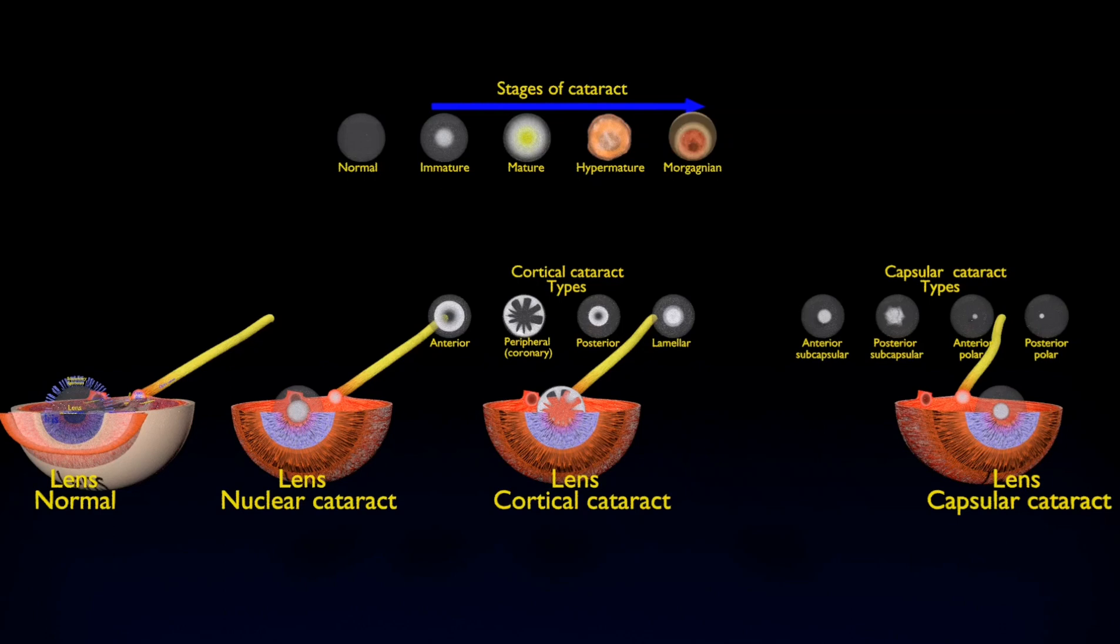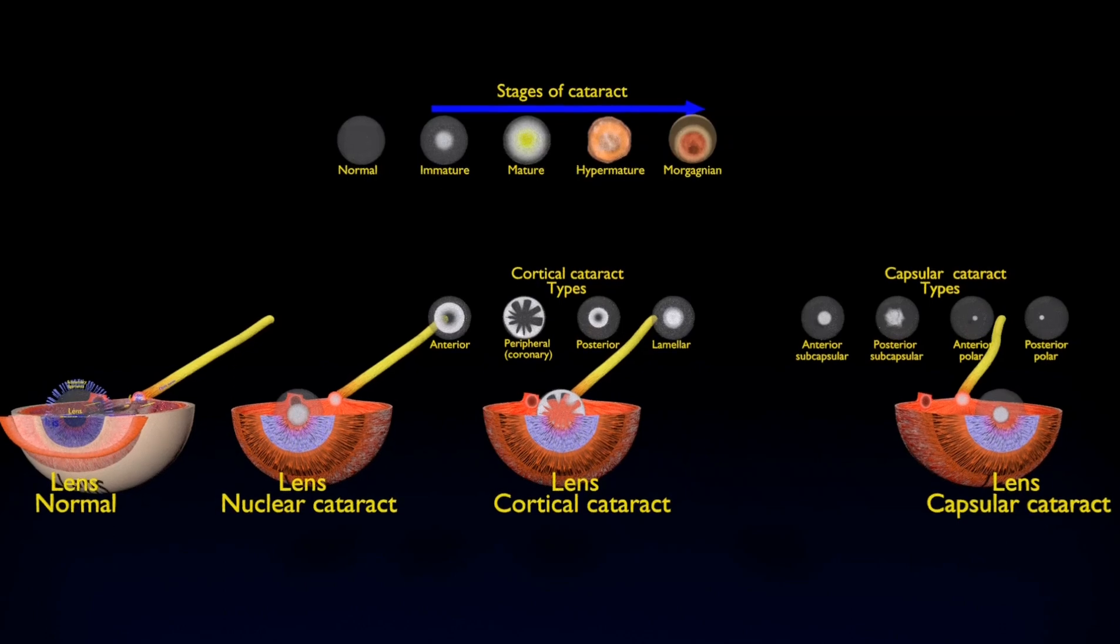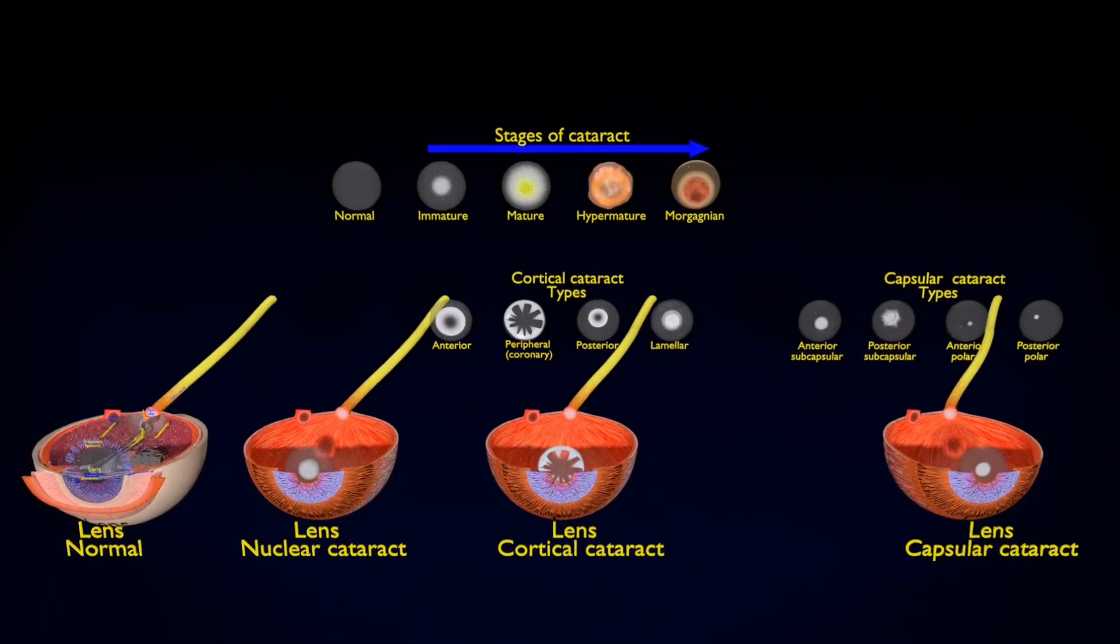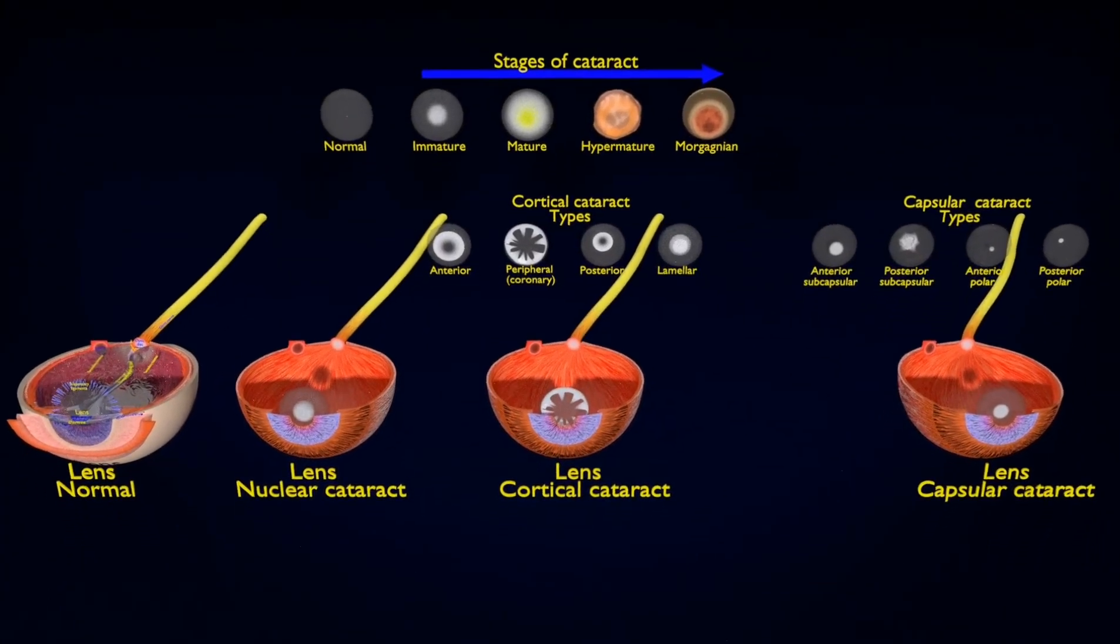Clouding of the normally clear lens of the eye is called cataract. Most cataracts develop when aging or injury changes the tissue that makes up the eye's lens.